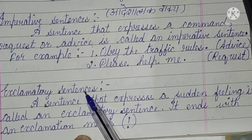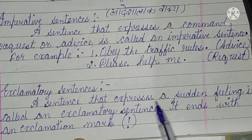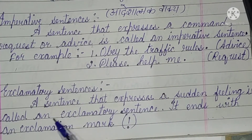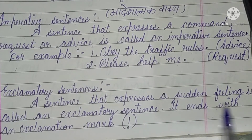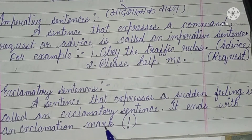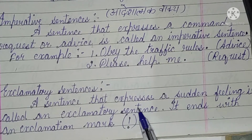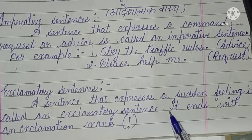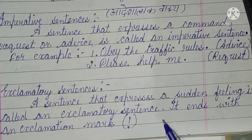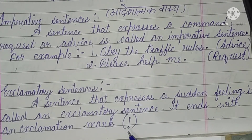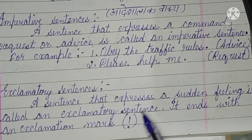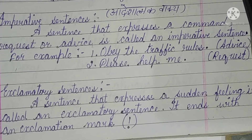The fourth type is exclamatory sentence. A sentence that expresses a sudden feeling is called an exclamatory sentence. It ends with an exclamation mark. Jis vakya mein achanak se koi bhavna prakat hoti hai — jaise achanak se humare saamne koi anubhav hota hai — usse hum exclamatory sentence kehte hain aur usme exclamation mark ka use hota hai.